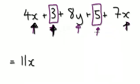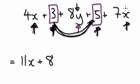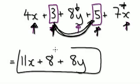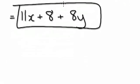Now, single numbers: three plus five is eight. And here you've got eight y — there are no other y terms around, so you just have to leave it as eight y. So remember, single numbers on their own are like one entity; you can merge them.